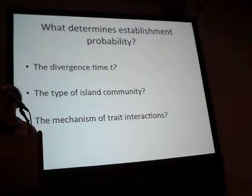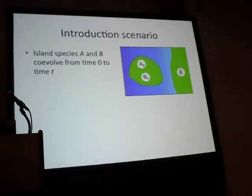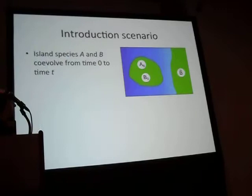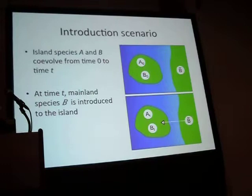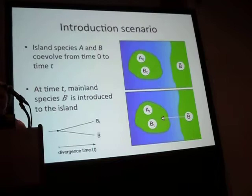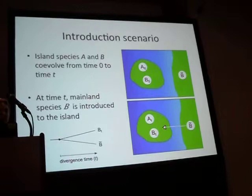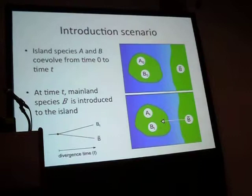To illustrate this, think about two species on an island, A and B, that are interacting and co-evolving for a certain period of time T. After that period, a new species is introduced, which starts interacting with both species on the island. What's important is that the later it arrives, the more it has diverged from its closely related species B, which is already on the island. You can then look at what the effect is of the length of co-evolution and the amount of divergence.